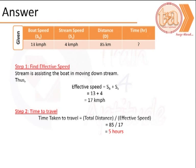We are given the speed of the boat is 13 km per hour. The speed of the stream is 4 km per hour. The distance one way is 85 km, and the time to travel downstream is what we need to find.